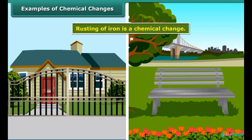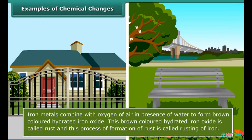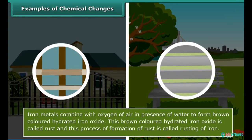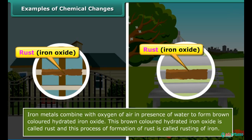Examples of chemical changes: Children, you can see many chemical changes in your daily life. Have you seen an iron gate or iron bench in a garden with a brownish film on it? This brownish film is called rust, and the process of its formation is called rusting. The chemical name of this rust is iron oxide.